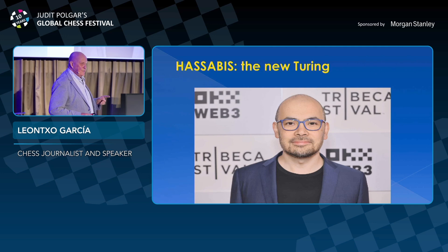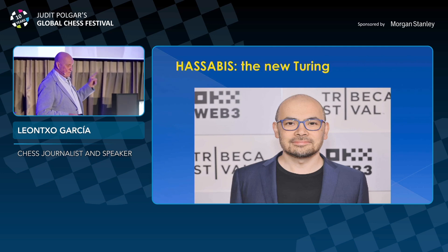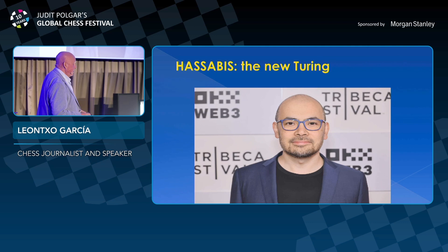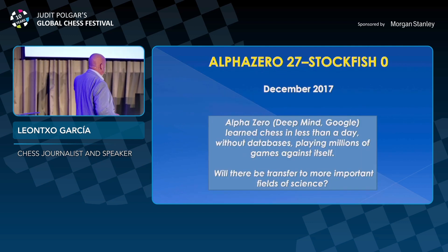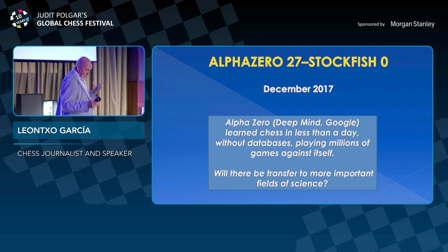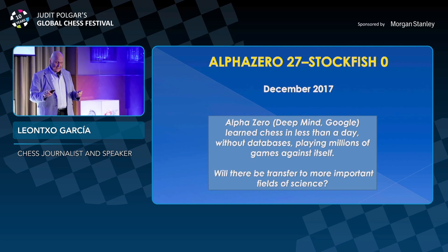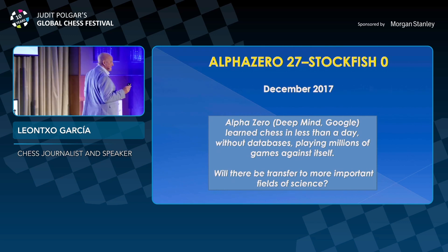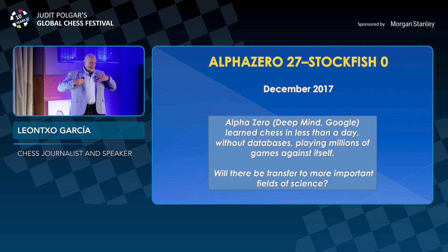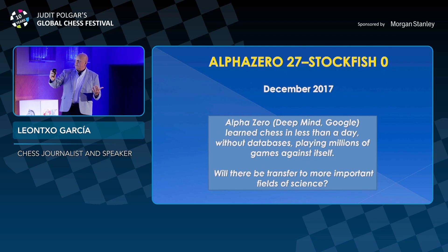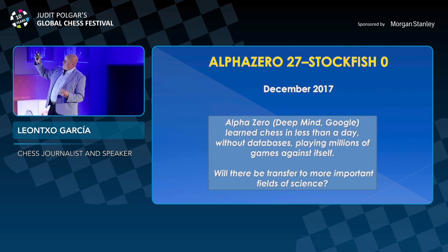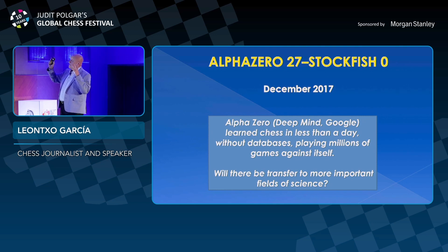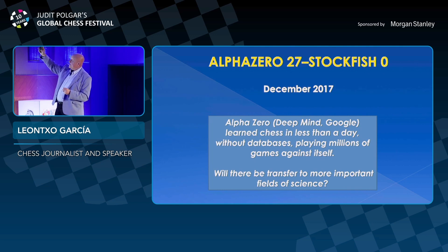He created DeepMind, Google bought DeepMind, and then what he did was the following. His new program, AlphaZero, learned chess in less than a day without databases at all, playing millions of games against itself, learning along that process. The result was a match between AlphaZero and the strongest chess program at that moment, Stockfish, and the result was 27 wins to 0.